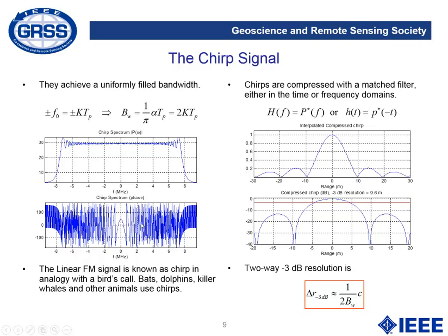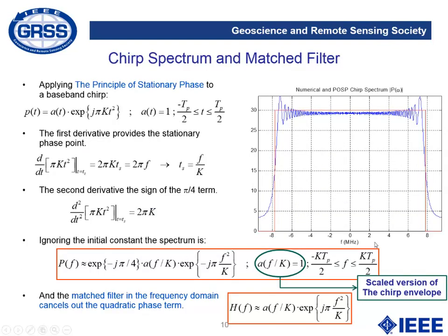If we look at the phase, we will see that it presents a quadratic dependency with frequency. It is possible to compress this chirp, and after compression we have a signal of much better resolution. The two-way resolution can be related with 1 divided by 2 times the bandwidth of the chirp, multiplied by the speed of light — this gives the resolution expressed in distance. For some mathematical developments, it can be interesting to characterize the spectrum of the chirp mathematically.